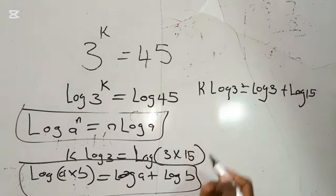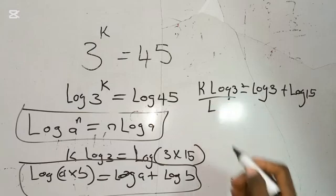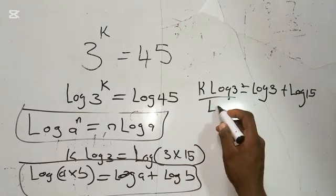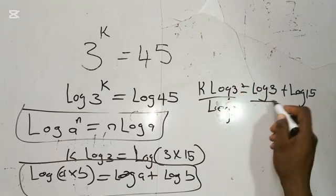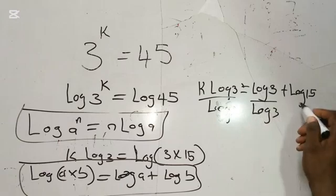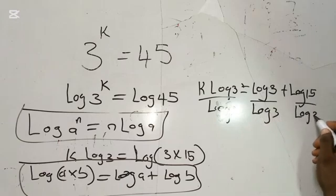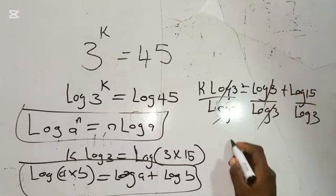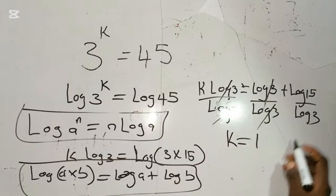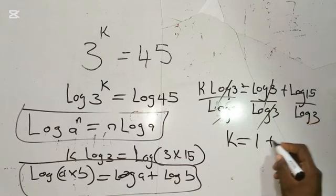Now divide both sides by log 3. Therefore, we have log 3 divided by log 3, and here also divided by log 3. So this cancels with this. This divided by this is going to give us 1, so we have k is equal to 1, and here we have...